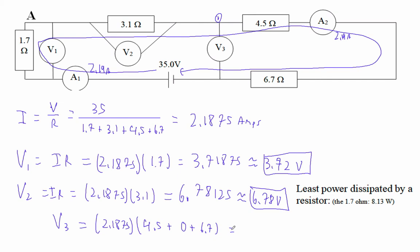So what is that? Let's find that. That guy times left parenthesis, 4.5 plus 6.7. I'm getting 24.5 volts.